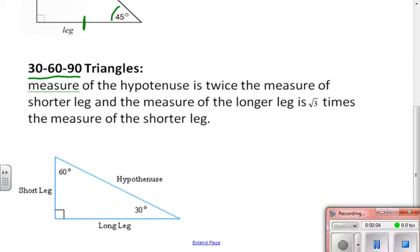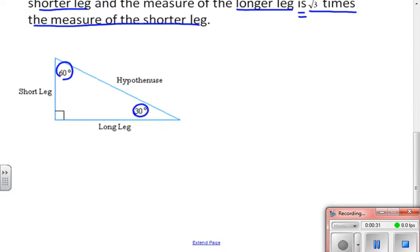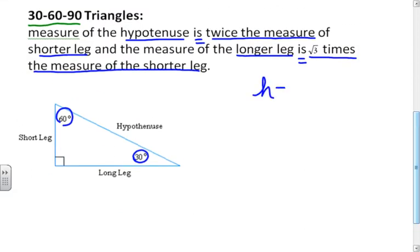In part two we're going to talk about 30-60-90 triangles. This is where I have a 60-degree angle and a 30-degree angle in my right triangle. The measure of the hypotenuse is twice the measure of the shorter leg, and the measure of the longer leg is the square root of three times the measure of the shorter leg. So the hypotenuse equals two times the short leg, and the long leg equals the square root of three times the short leg.